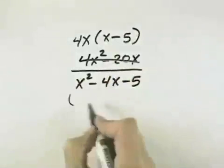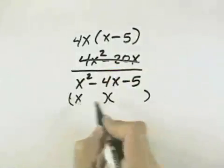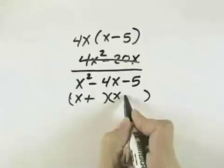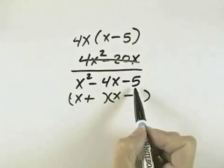In the denominator, it's a trinomial, so we'll set up our two parentheses. We know x is the first term, and there's opposite signs. We know we want a 5 and a 1.